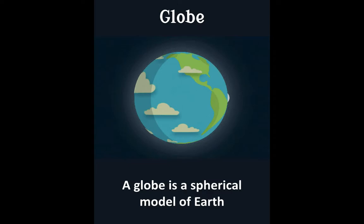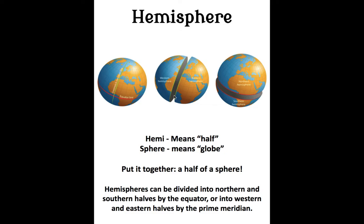First, let's look at how we can divide a globe up into different pieces. When we divide a globe up into different pieces, we call them hemispheres. Hemisphere has two parts. The root word is sphere — a sphere means a globe, a three-dimensional round shape, like a ball. Hemi is a prefix that we put in front of the word sphere. Hemi means half. So when we say hemisphere, what we're saying is half of a globe.